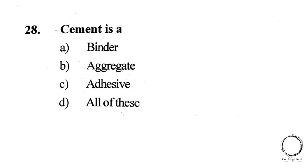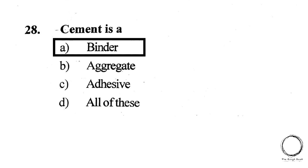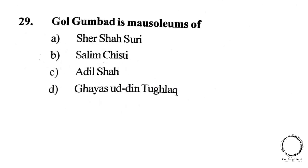Next question: Cement is a — A) Binder, B) Aggregate, C) Adhesive, D) All of these. The answer is A) Binder. Next question: Gol Gumbaz is the mausoleum of — A) Sher Shah Suri, B) Salim Chishti, C) Adil Shah, D) Ghiyasuddin Tughlak. The answer is C) Adil Shah.